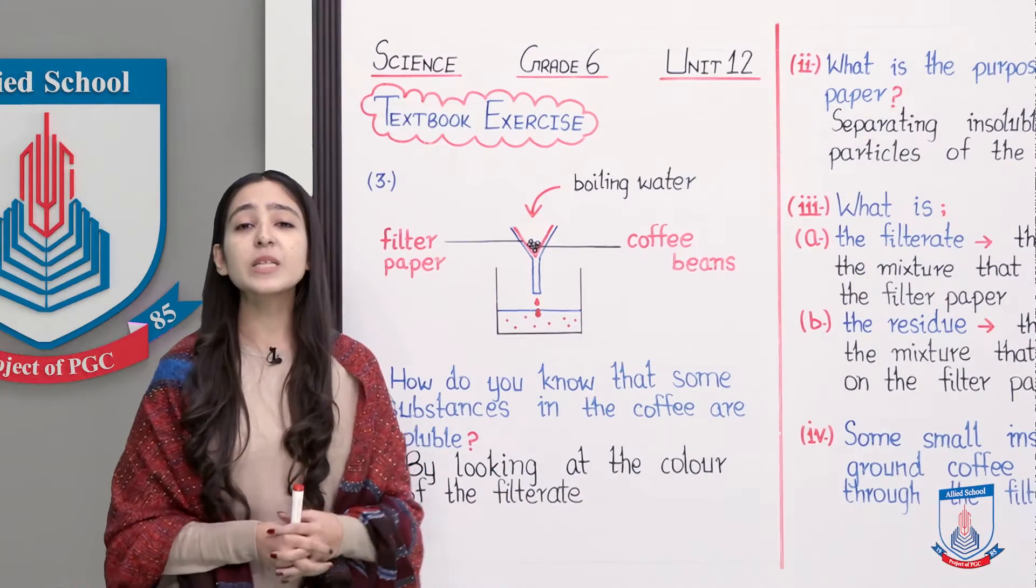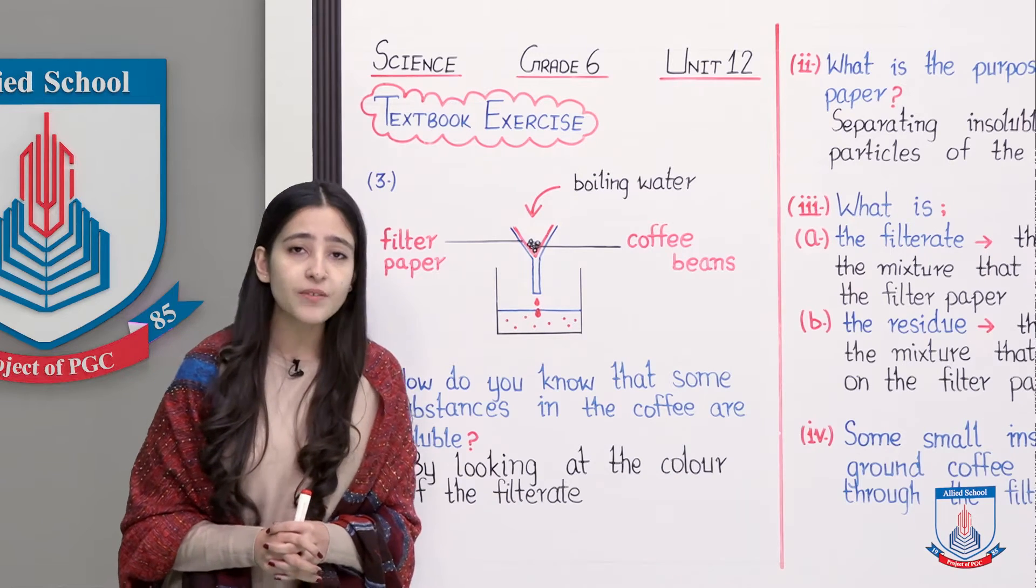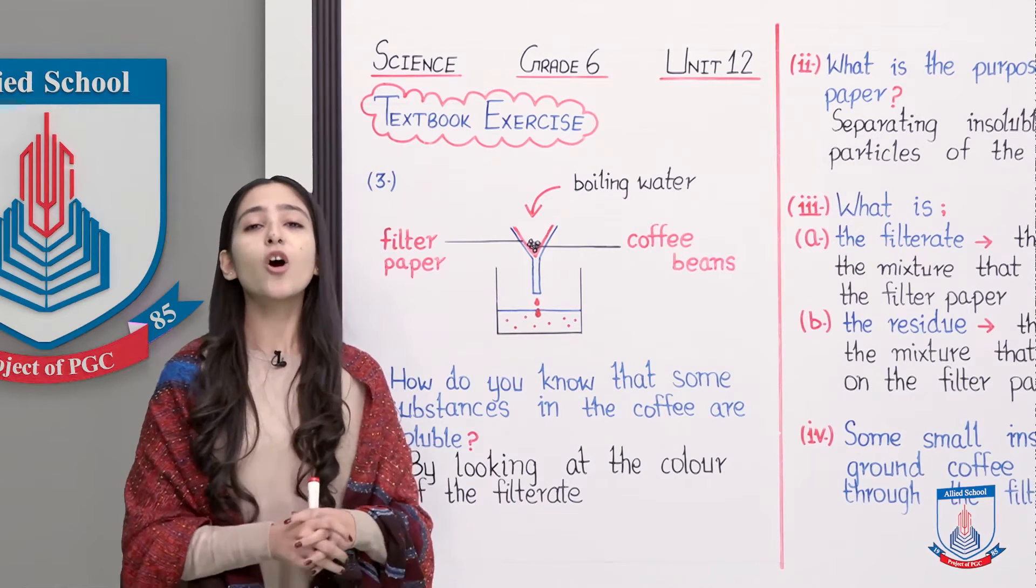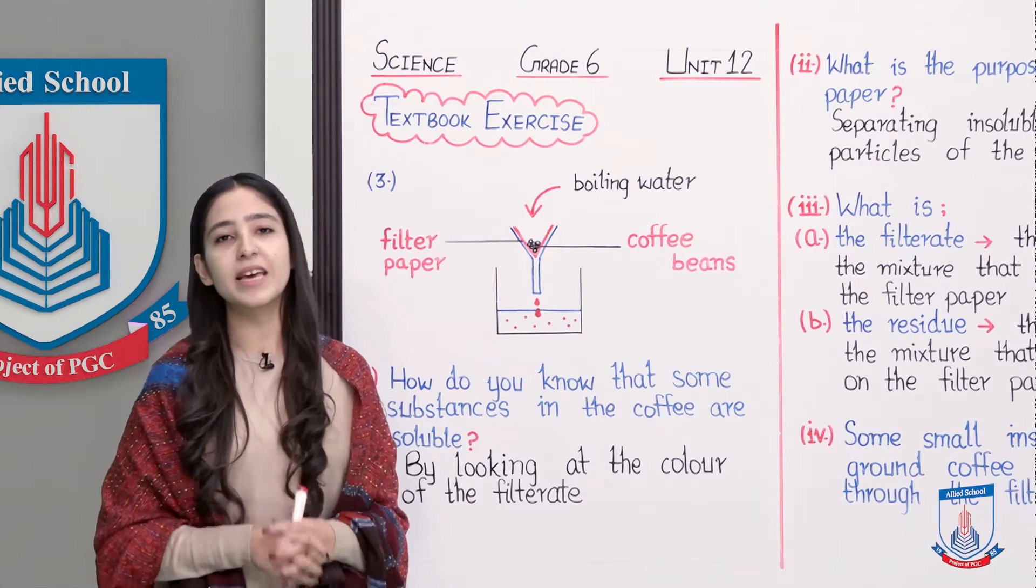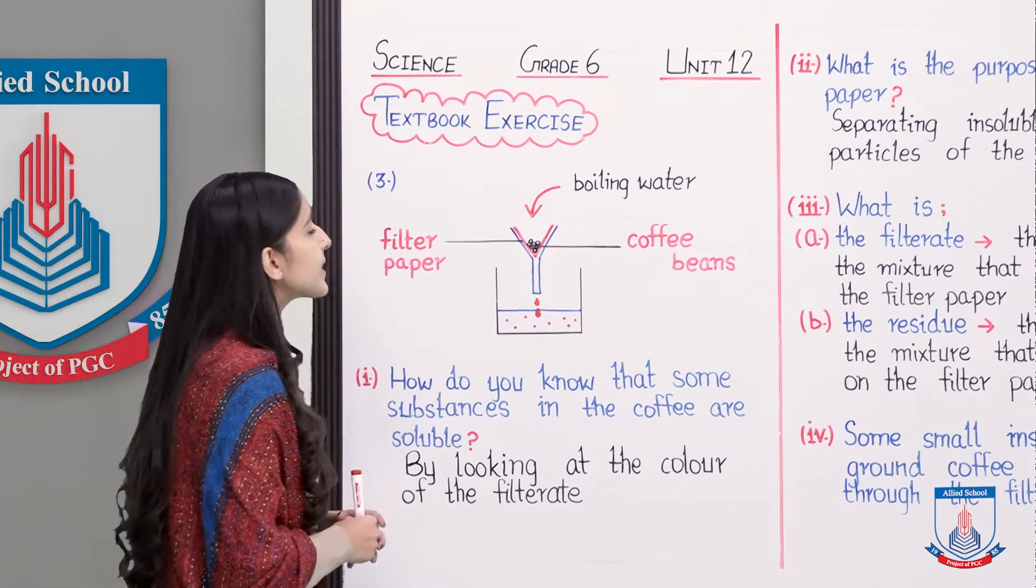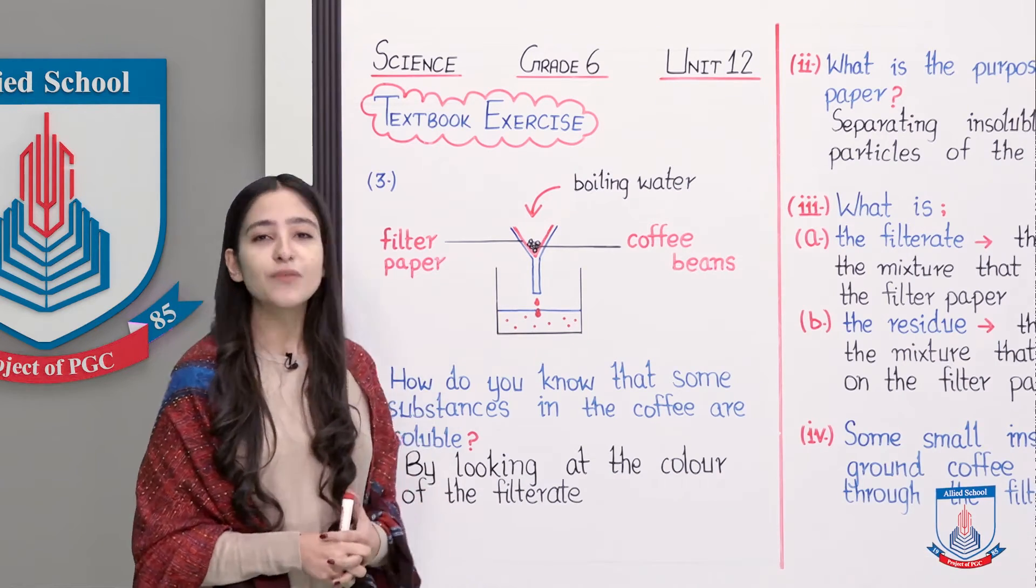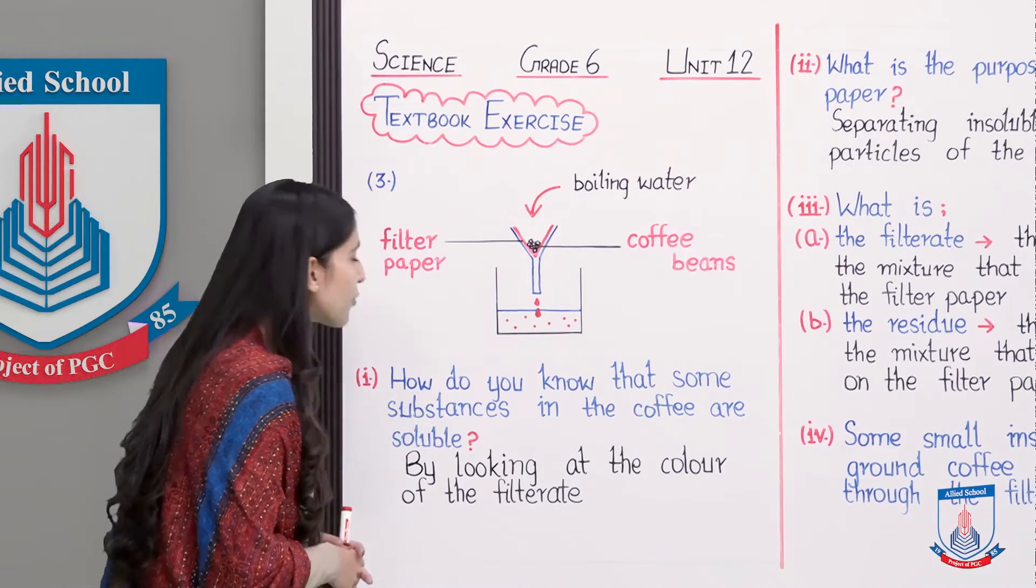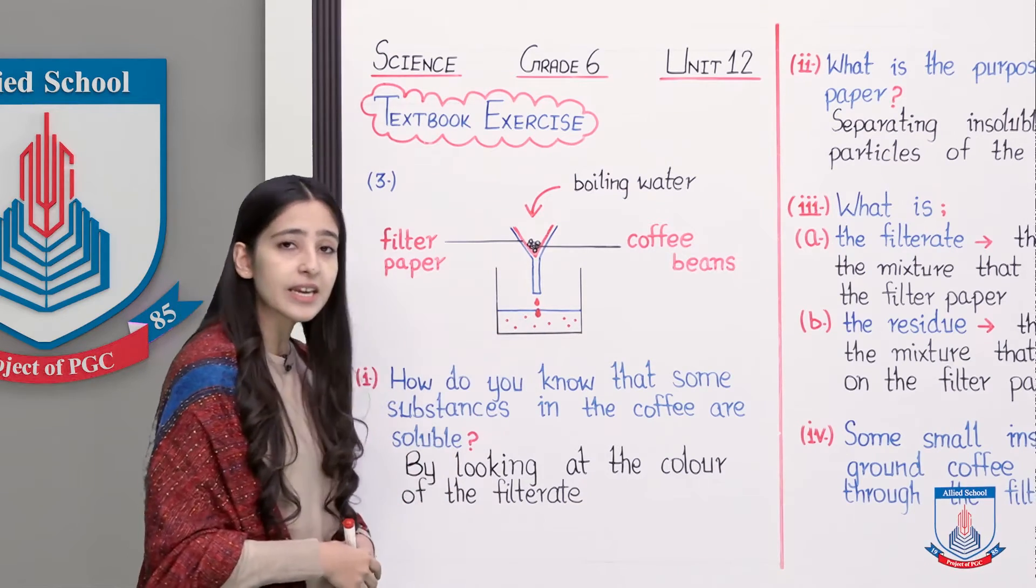So let's start. In your textbook exercise, question number 3 has a diagram given, that is a coffee machine, and you have been asked some questions about it. With the help of this diagram, we will find answers to all these questions.